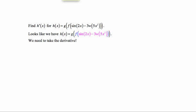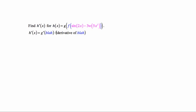So we need to take the derivative. Well, we know that h prime of x is going to be g prime of blah, whatever is in here, times the derivative of blah. So we'll work that out. Since this blah stuff here is f of something, it will become g prime of f of all that stuff, times the derivative of all that stuff.